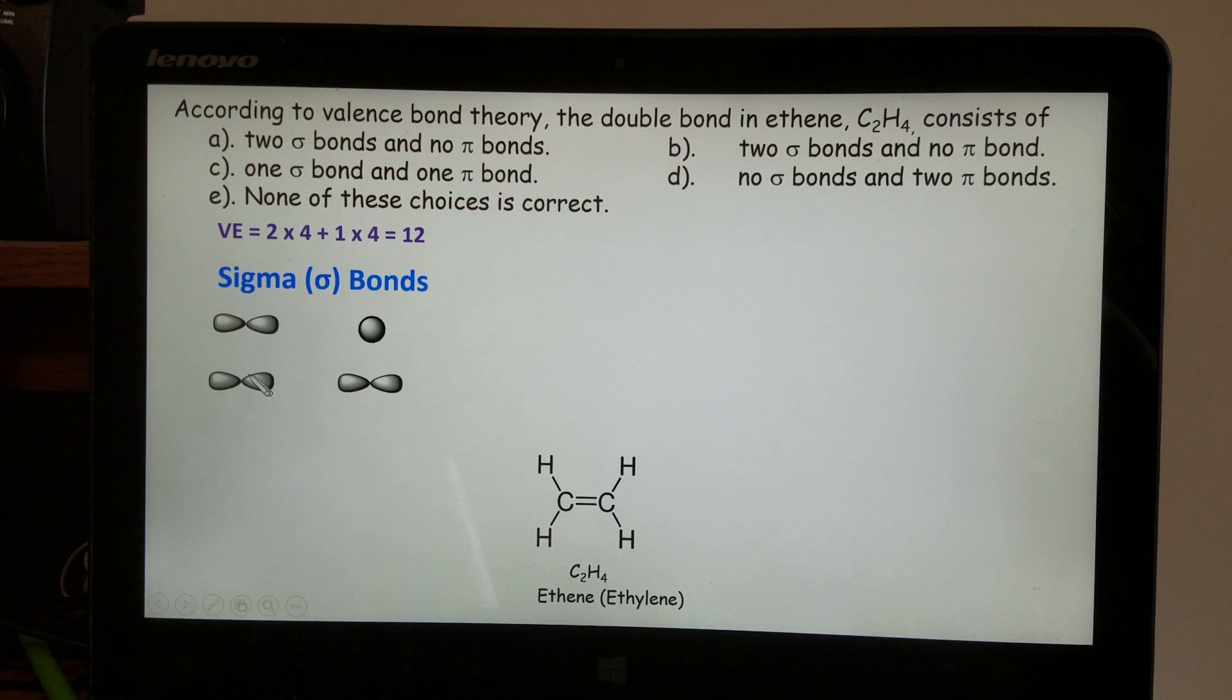Or if two p orbitals approach each other, head to head or head to tail, doesn't matter, sigma bonds also are formed.